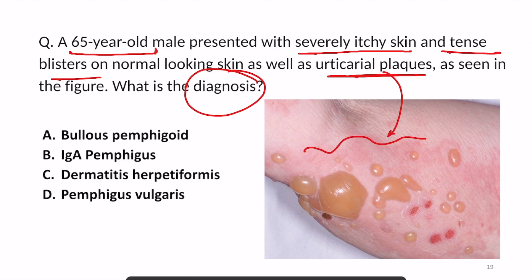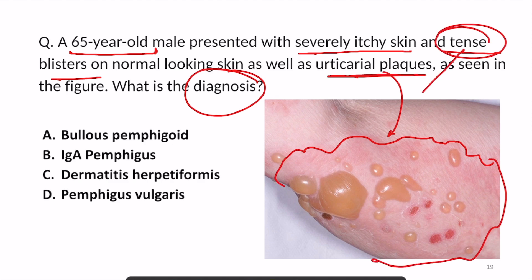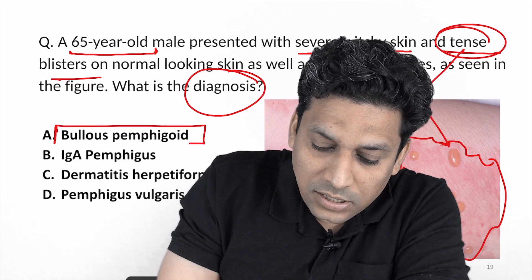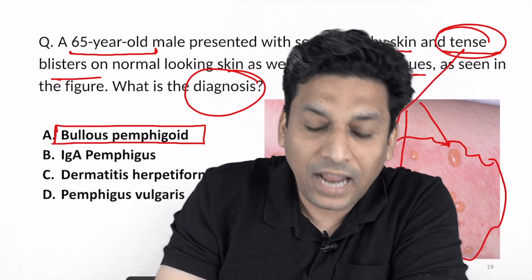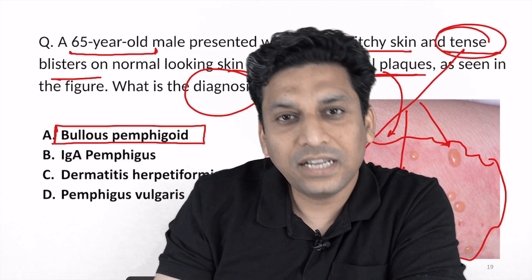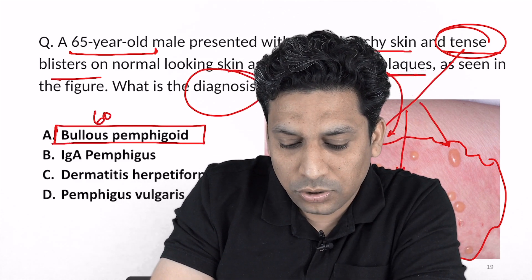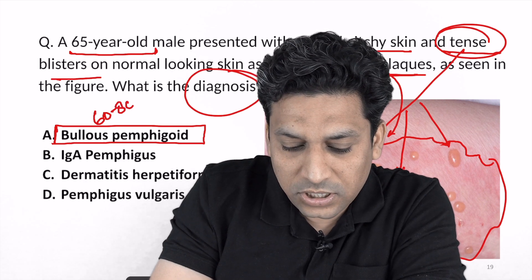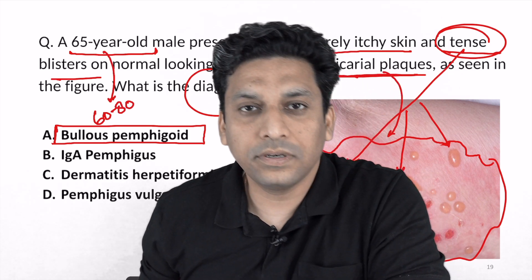This is the urticarial plaque, and over this plaque the patient is having tense blisters — these are those tense blisters. Such a presentation is seen in bullous pemphigoid. Bullous pemphigoid is a condition which generally occurs in the age group of 60 to 80 years.